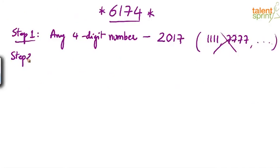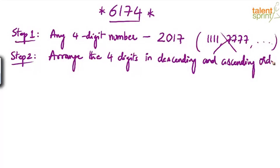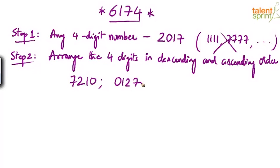Step two: arrange the four digits of the chosen number in descending and ascending order. Looking at the number 2017, if we arrange the digits in descending order — from the largest digit to the smallest — we get 7210. And when we arrange the digits in ascending order, we get 0127.